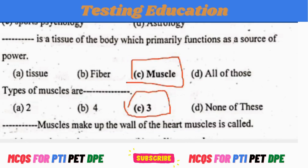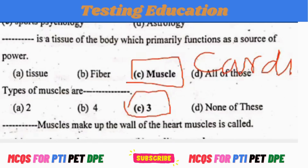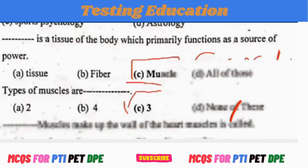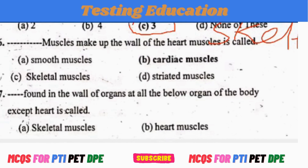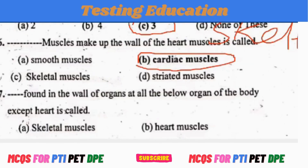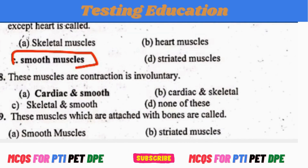Cardiac muscle makes up the wall of the heart and is called Cardiac Muscle or Cardiac Wall. Smooth muscles are found in the walls of organs throughout the body. Both cardiac muscle and smooth muscle are involuntary.